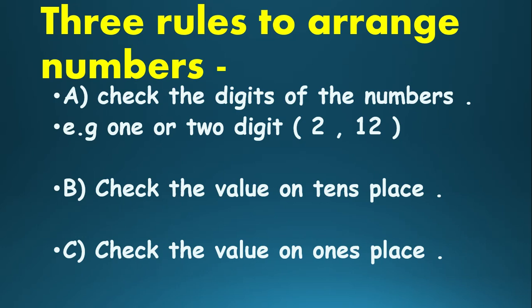The first rule is: check the digits of the numbers — one digit or two digit. For example, 2 is a one-digit number, there is only one digit. And 12 is a two-digit number. It means if you have a one-digit number and the other is a two-digit number, the one-digit number is always smaller than the two-digit number.